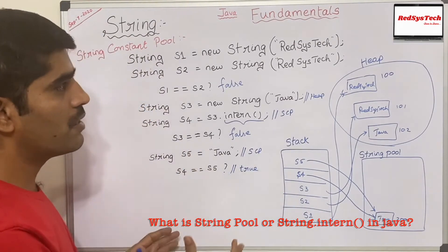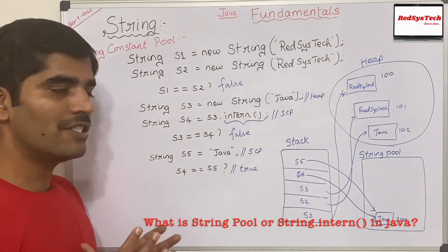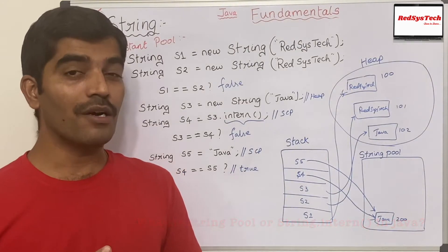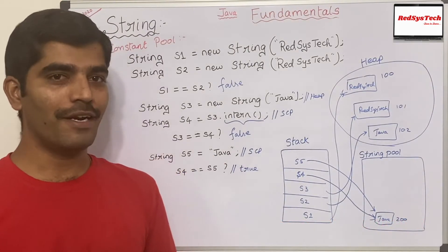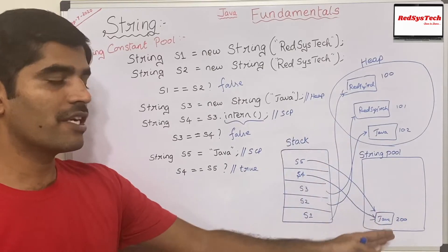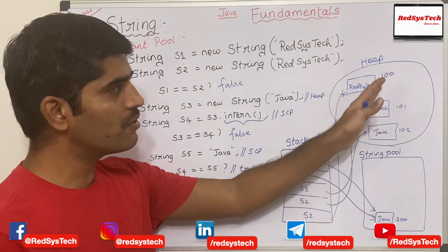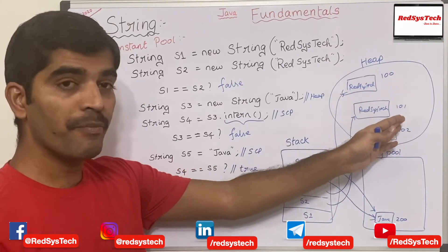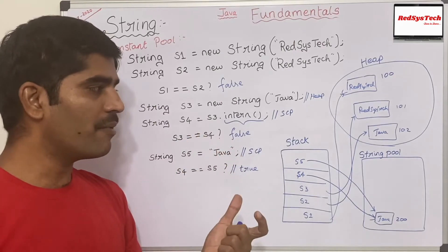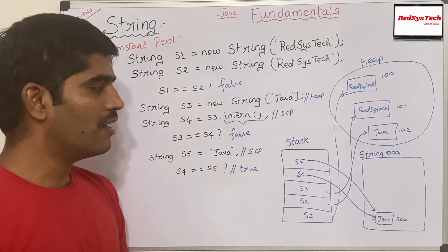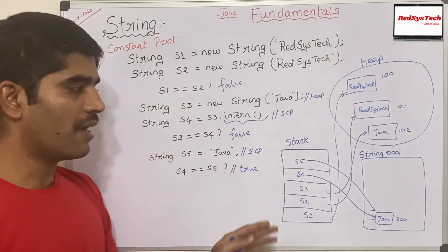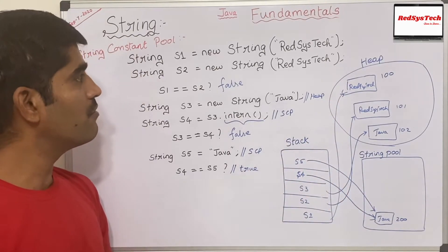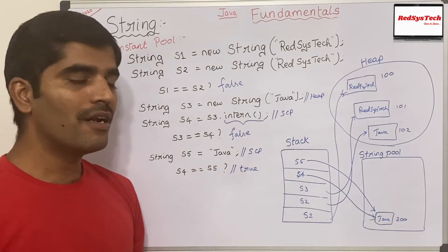So when I say s4 == s5, both s4 and s5 refer to the same address 200 in the String Pool, so it returns true. This is how String objects in Java work — you should know whether a string is coming from heap or from the String Pool. This saves a lot of memory instead of creating 'java' many times in heap. Java returns the same single unique copy, which helps in tuning heap memory. This is one of the beauties of the String class.